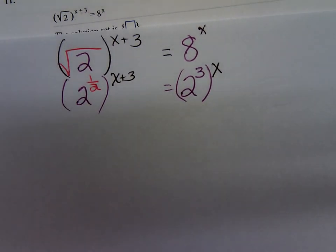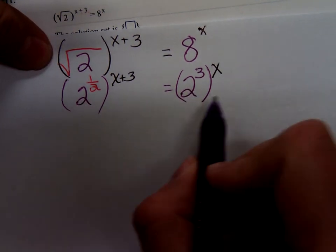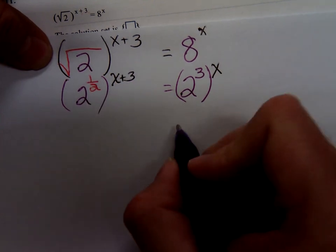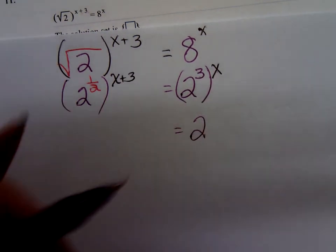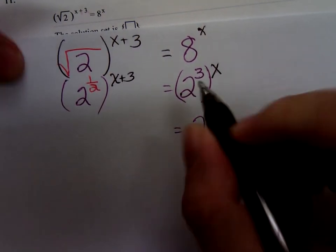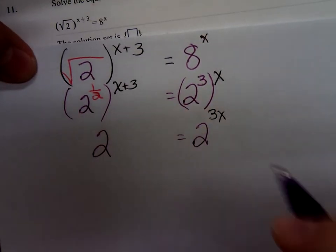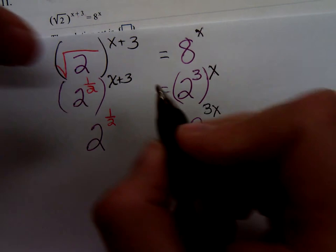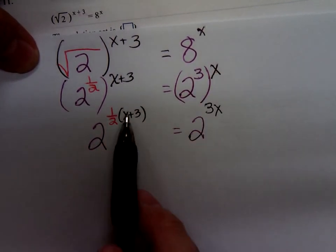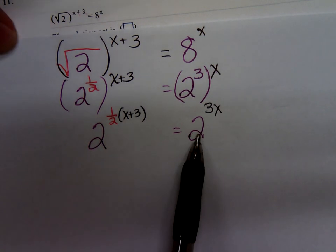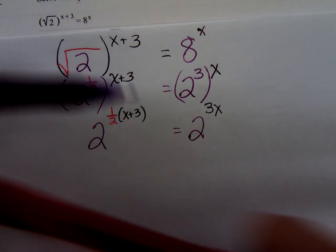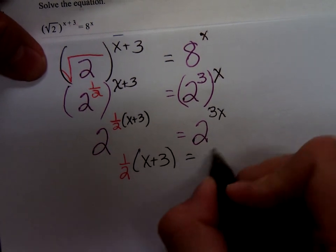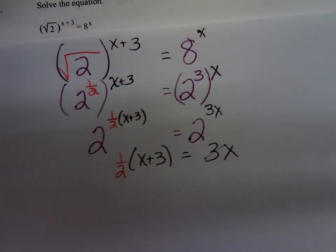Now, once you have it written like that, write it without the parentheses. I'm going to multiply 3 times x. This is a 3x. And over here, I'm just going to write it like this because it will make it a little bit easier to solve it. I'm not actually going to distribute that 1 half. I'm just going to write it like that. And then, drop the big 2's. So, here's the equation I'm solving: 1 half times x plus 3 equals 3x.